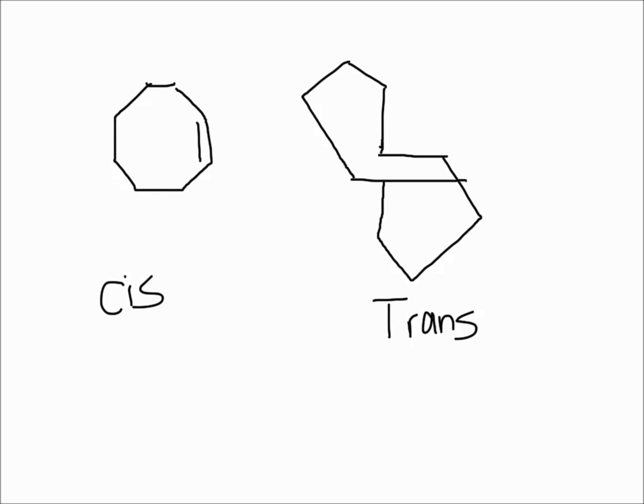That pretty much sums it up for cycloalkene stability. What you need to remember is that three and four carbon rings will not have double bonds - they'll be really rare and highly unstable. But five, six, and seven carbon rings can have double bonds, but they are more stable if it's cis. Most of the time, the vast majority of the time, you're going to have the cis isomer for rings with five, six, or seven carbons.